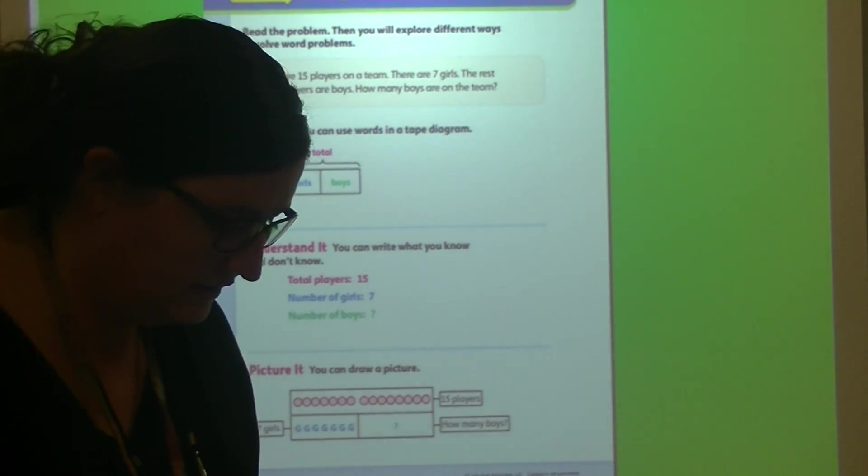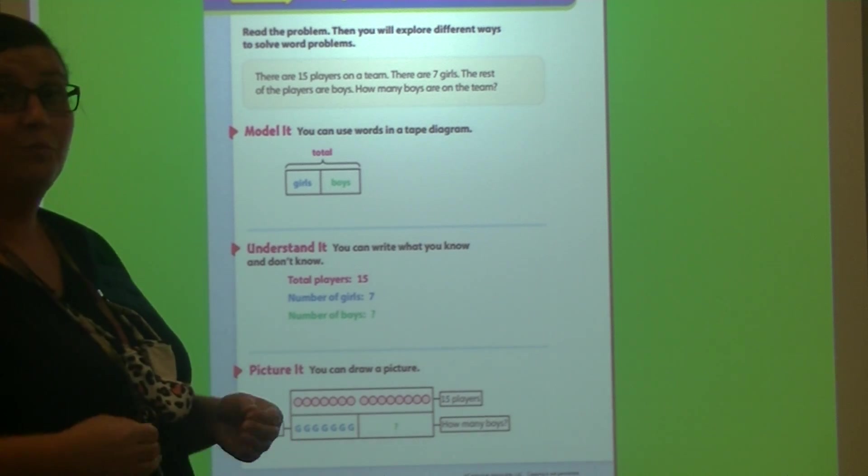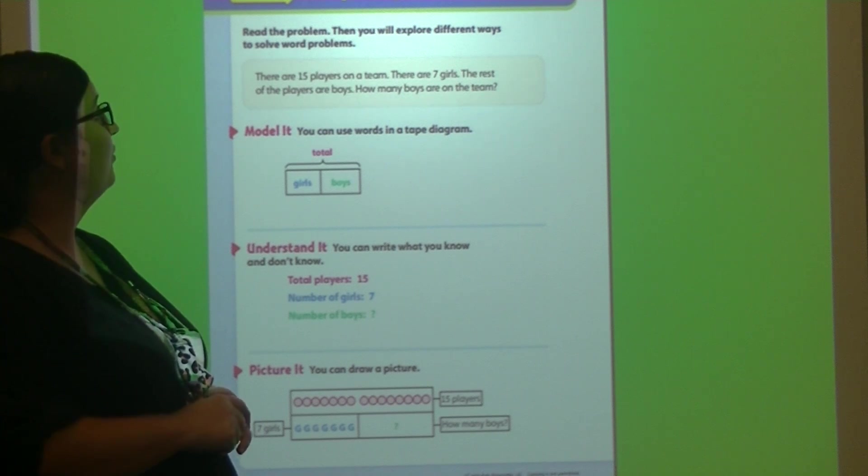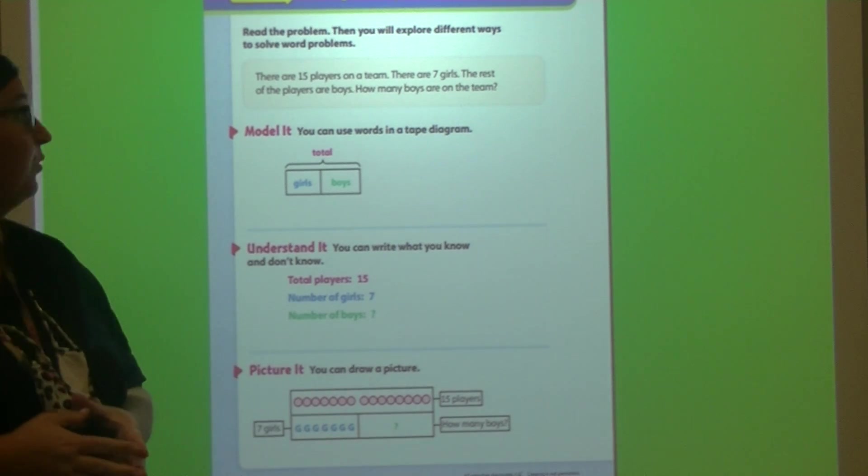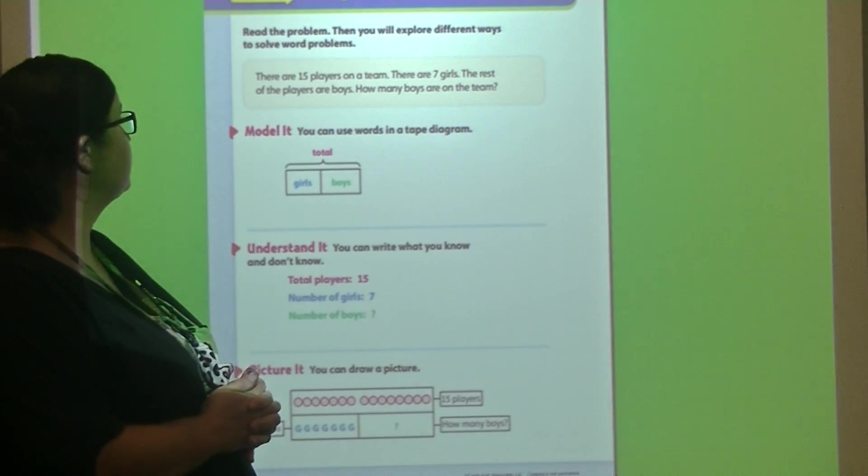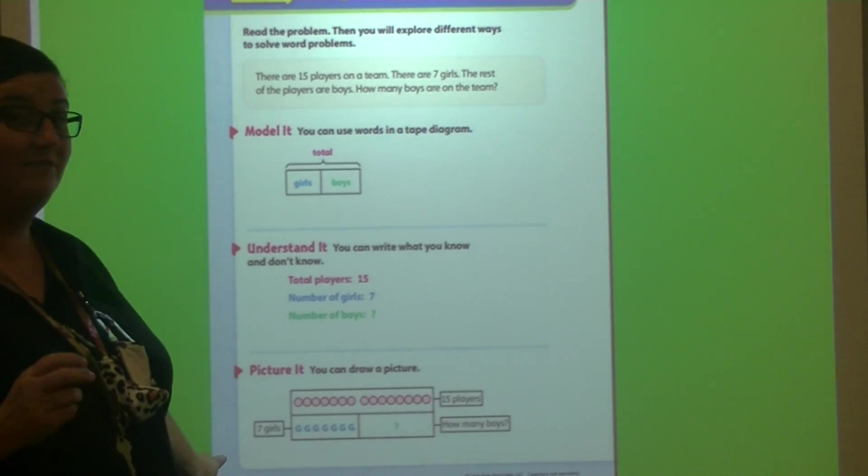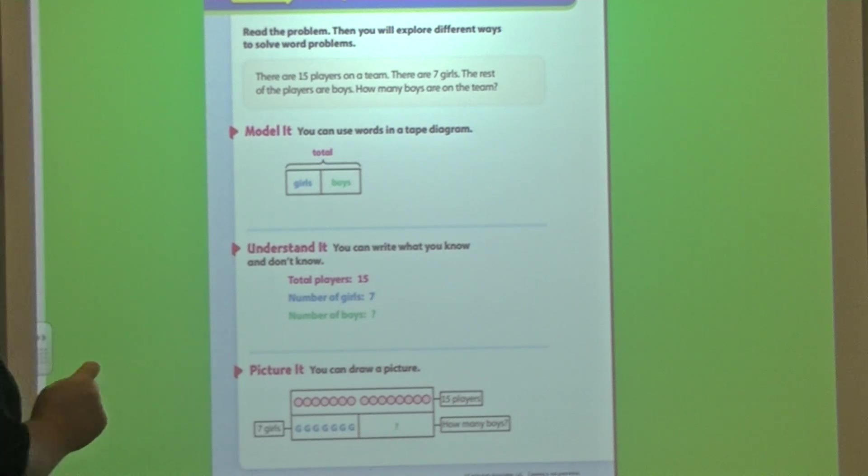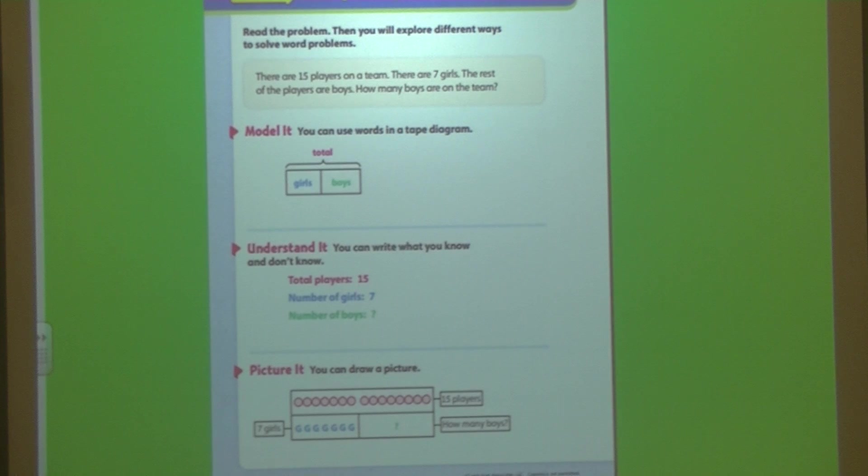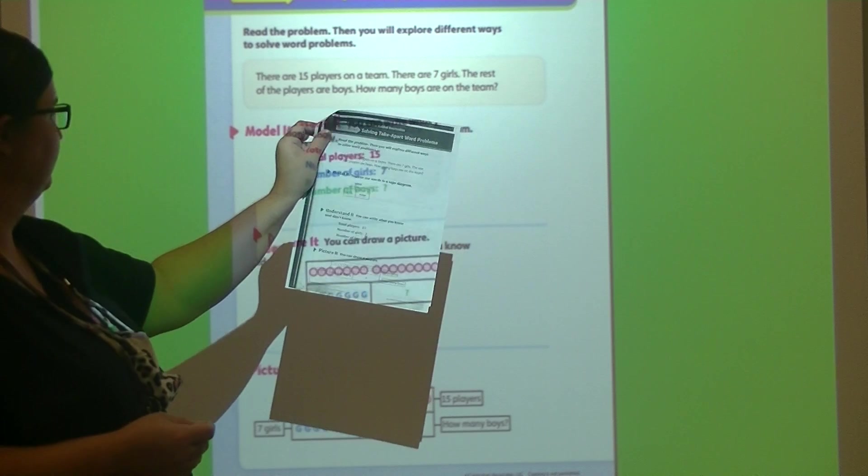Alright boys and girls, let's continue with working on addition and subtraction, solving word problems. So today we're going to work on solving take-apart word problems. Read the problem, then you will explore different ways to solve word problems. So let's look at our first word problem. You should be on page 10, page 10 of Lesson 2 Packet. Yours is in black and white, so on the front you have the page with the grapes.